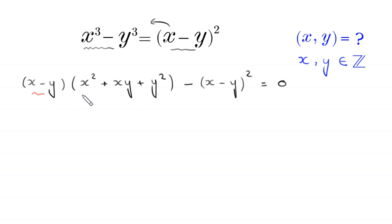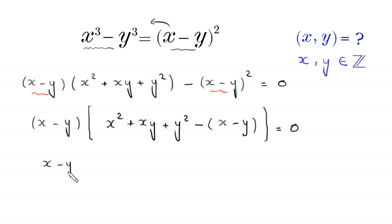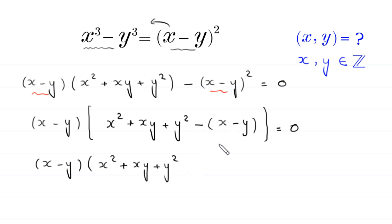Now we can factor out x minus y as a common factor. In the bracket, we have x squared plus xy plus y squared minus x minus y is equal to 0. Opening these brackets, this will become x squared plus xy plus y squared minus x plus y is equal to 0.